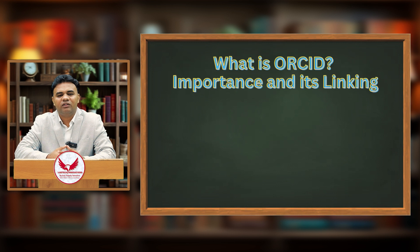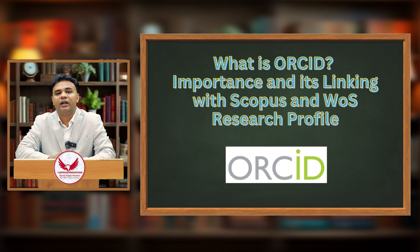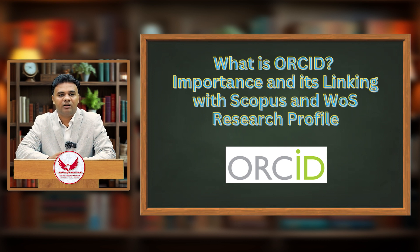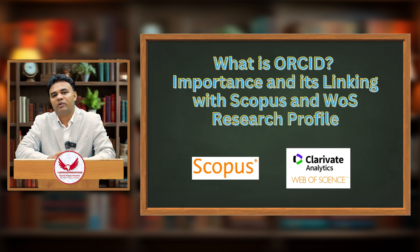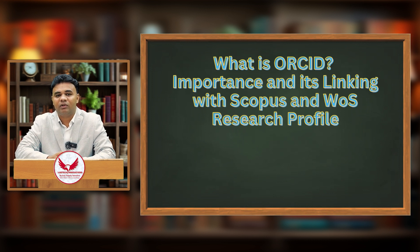Next, we need to understand a few additional points that researchers may or may not know. First is what is ORCID — it is a unique identifier used for publications and is now mandatory in both Scopus and Web of Science publications. We will cover how to create an ORCID ID, how to integrate your ORCID ID with the Scopus database, and how to integrate it with the Web of Science database in a separate session.